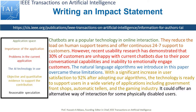The statement also notes: 'It could offer an alternative way of interaction for some physically disabled users.' This is what I would call reasonable speculation — a logical extension that takes the work beyond its immediate context to other types of applications where it could be useful. This example is available in the information for authors on the IEEE Transactions on AI website. I look forward to receiving your paper and your impact statement in the Transactions on AI.